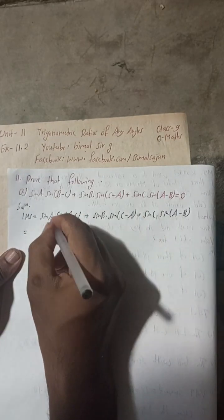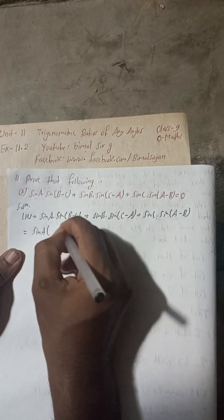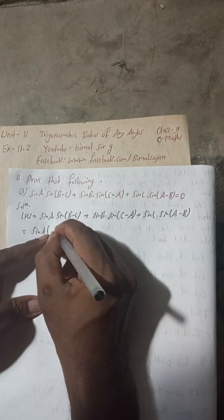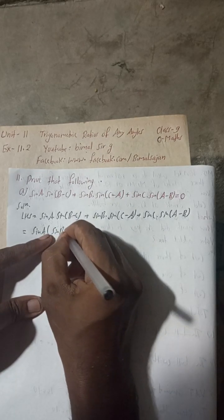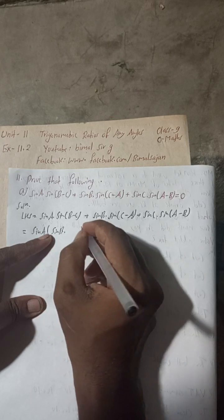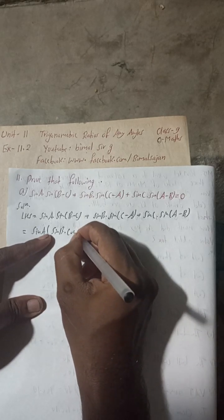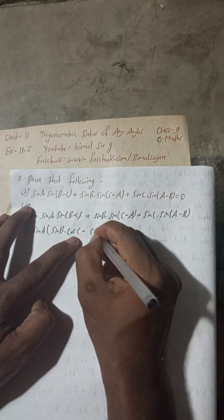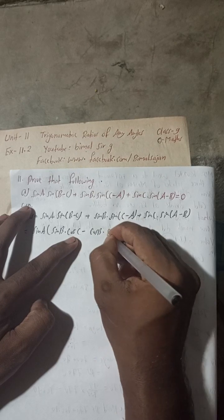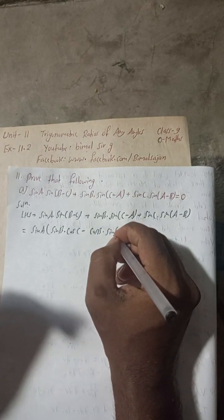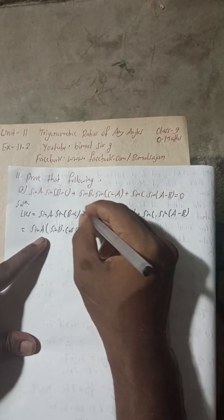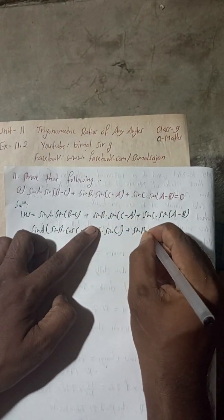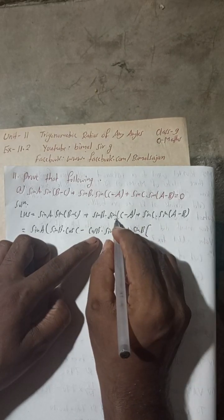Now sin A as it is and now sin B minus C formula we will apply here. So sin B minus C is sin B cos C minus cos B sin C. Now this is done, now plus sin B as it is.